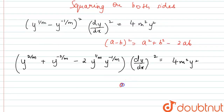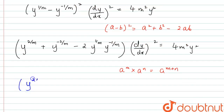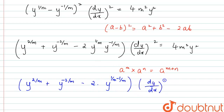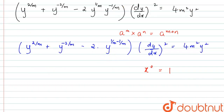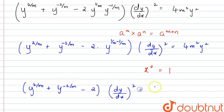Using the exponent law a^m · a^n = a^(m+n), we combine y^(1/m) · y^(−1/m) = y^0 = 1. So the expression simplifies to: y^(2/m) + y^(−2/m) − 2 into (dy/dx)² = 4m²y². We take this as Equation 1.